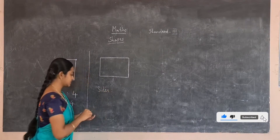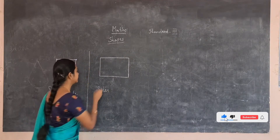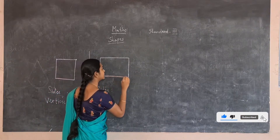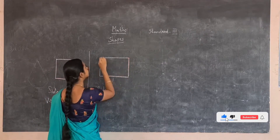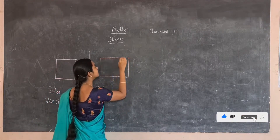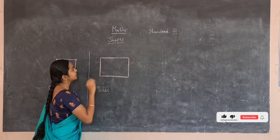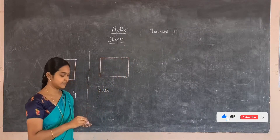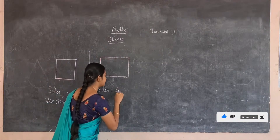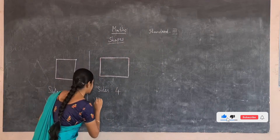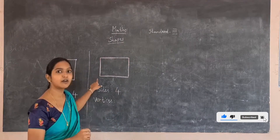1, 2, 3 and 4. Now see how many lines are there in the rectangle: 1, 2, 3 and 4. There are 4 lines in the rectangle, so the rectangle has 4 sides.